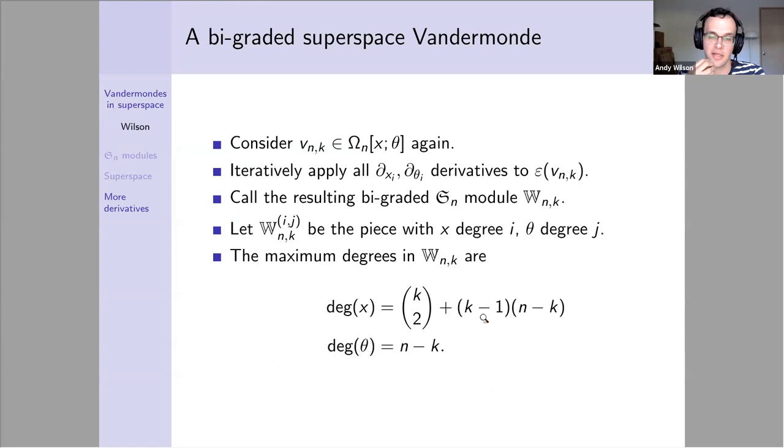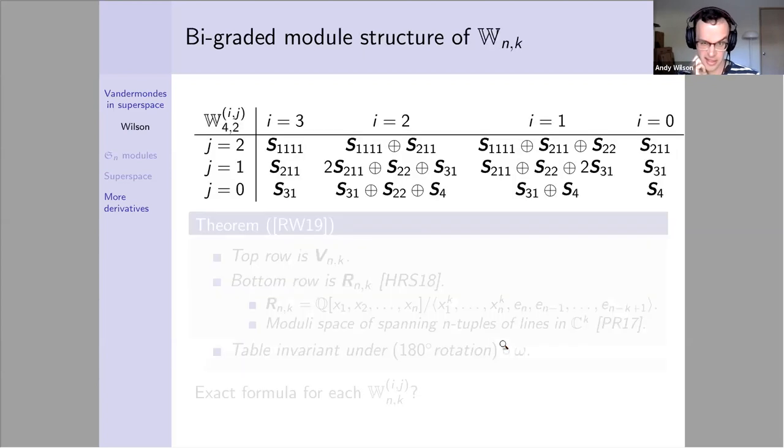Starting from the same superspace seed, the same super monomial, we're going to take x and theta derivatives and get a bi-grading. I'm going to call this bigraded module W_{n,k}. It's not hard to check that these are the maximum degrees in x and theta part if you look at the original super monomial. This is just an n equals 4, k equals 2 case. I have the x grading going across the top and the theta grading going down the side. I've decomposed each part into Specht modules or Schur functions.